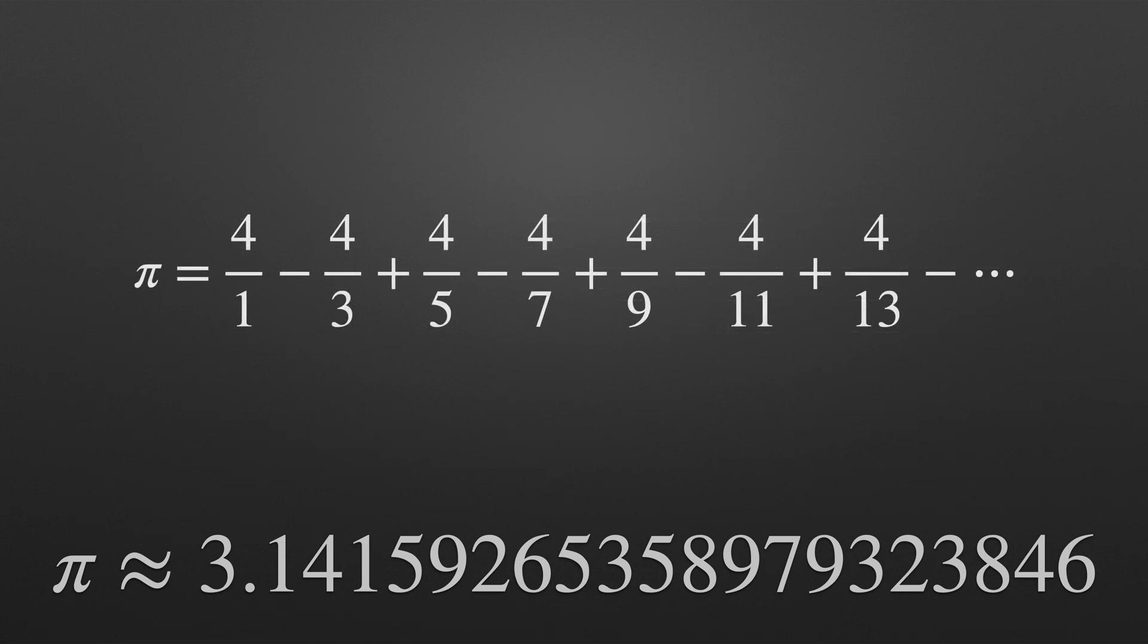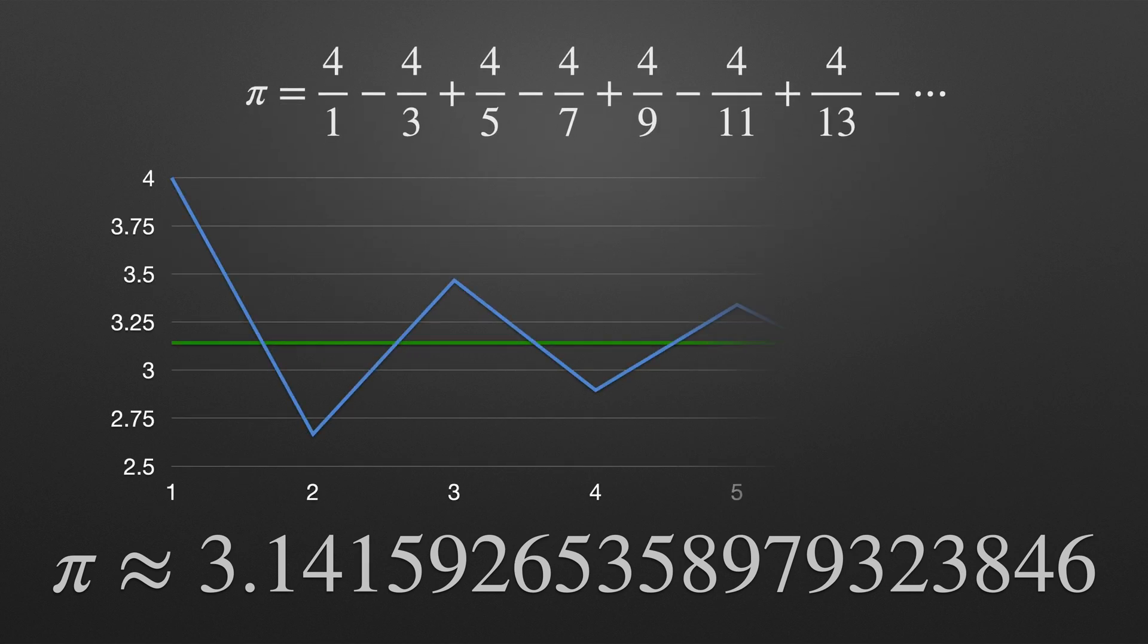This is the Gregory Leibniz series. You can hopefully see the pattern here and with each further term added to the sum the total gradually gets closer and closer to the value of pi. But just how gradually are we talking about here? Well that's actually quite slow to converge and even after 5000 terms it's still only correct to four decimal places.